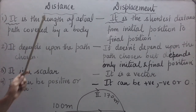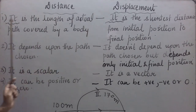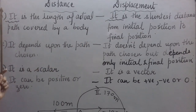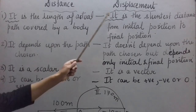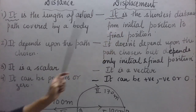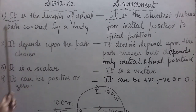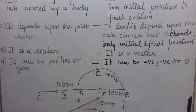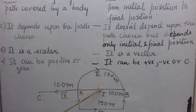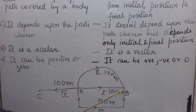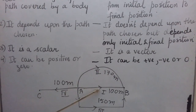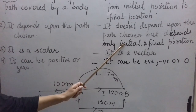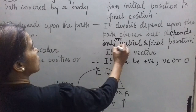Coming to our next learning outcome — the differences between distance and displacement. First difference: distance is the length of the actual path covered by a body, while displacement is the shortest distance from initial position to final position. Second difference: distance covered depends upon the path chosen. As we saw, the three persons with the same start and end points had different distances because their paths were different. Displacement does not depend upon the path chosen, but depends only on the initial and final positions.